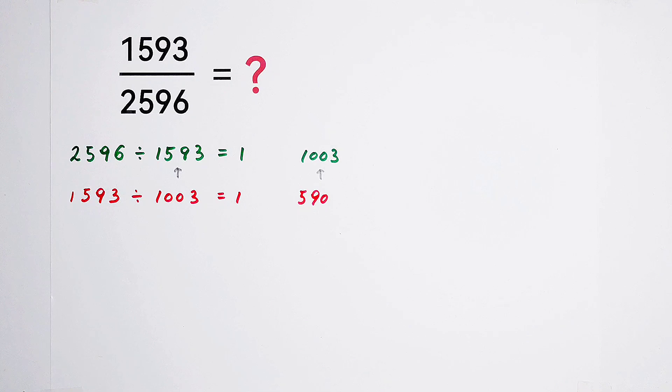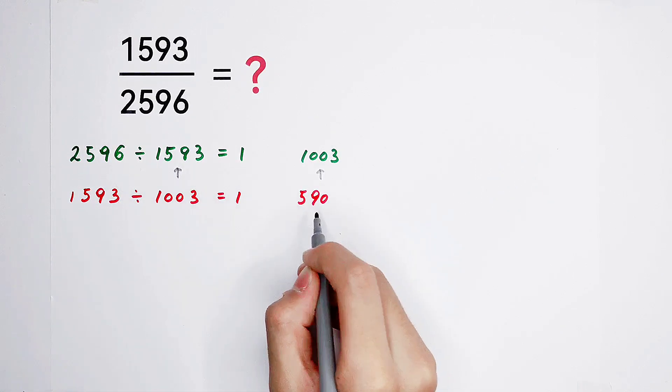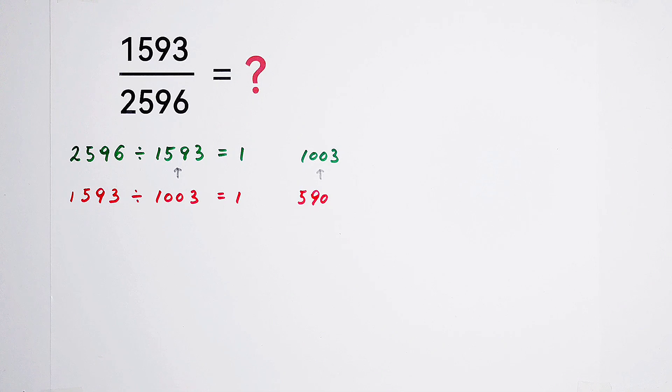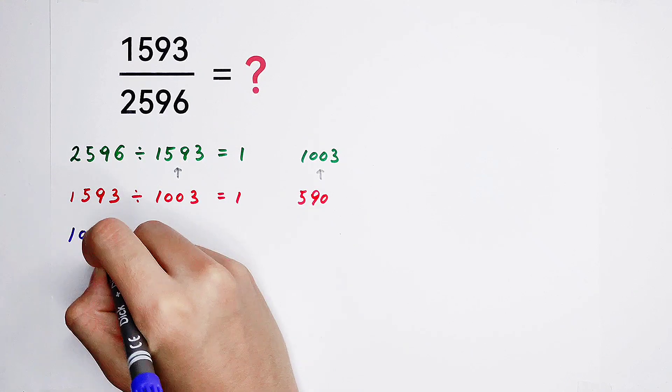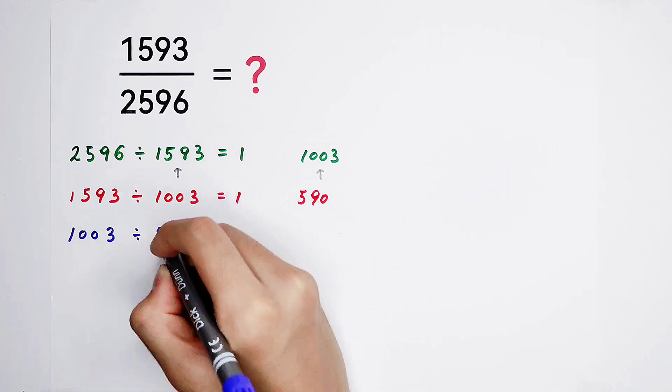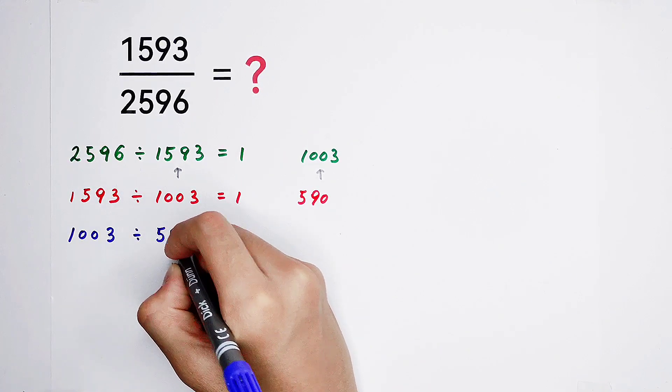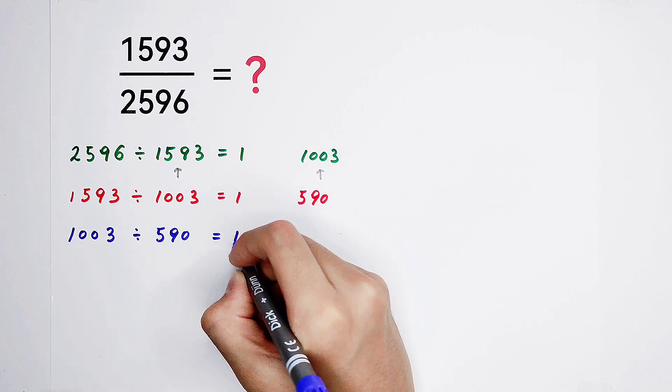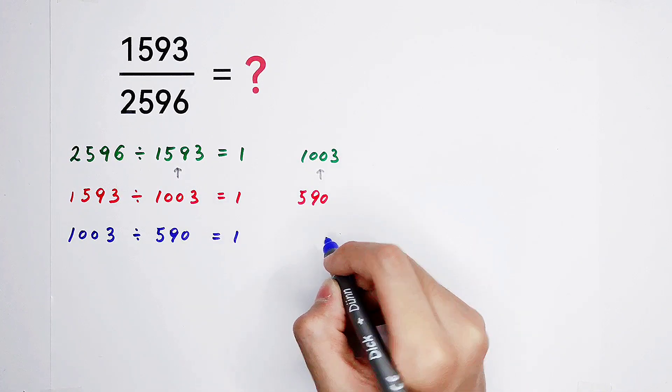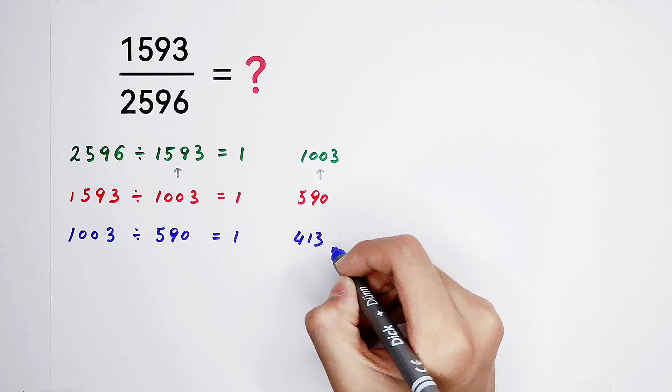Repeat this process. Compare these two numbers. Of course, our divisor, 1,003, is larger. So, divide it by 590. It's gonna be 1 and then the remainder is gonna be 413.